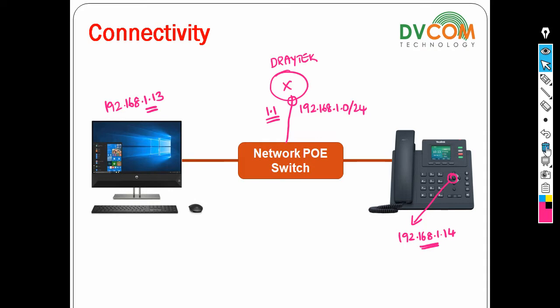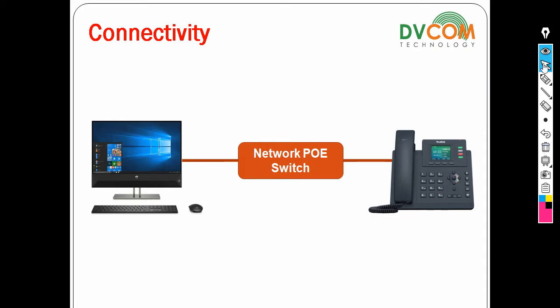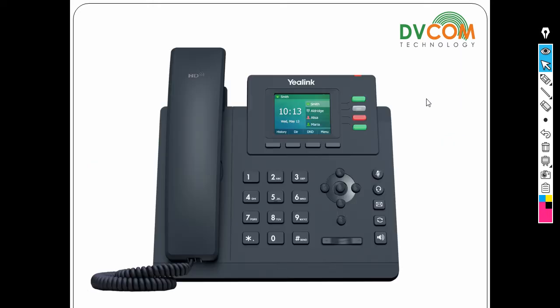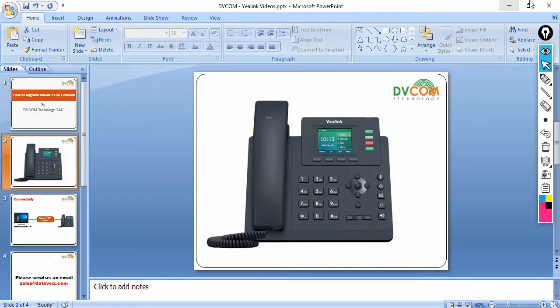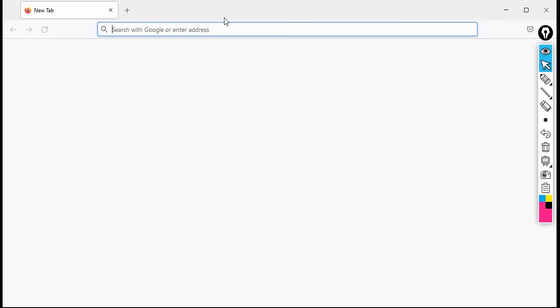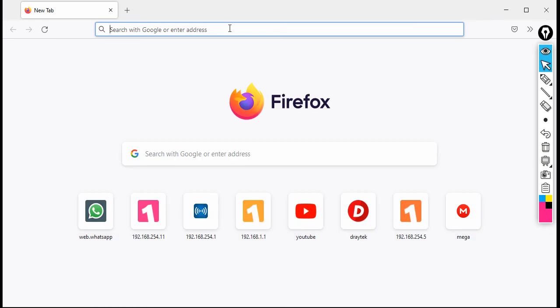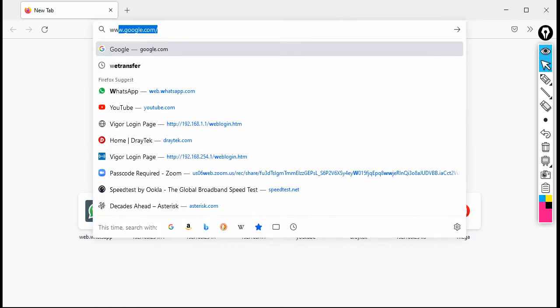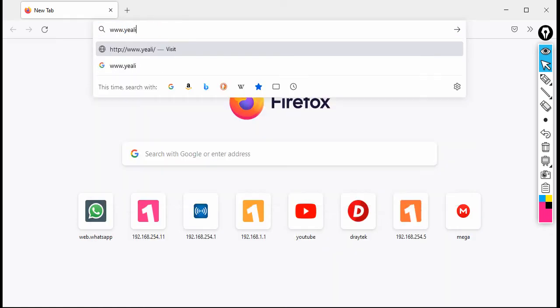The second step is that you need to download the firmware. Where do you get the download? For that, I'm going to stop my presentation, open the browser, and type www.alink.com.